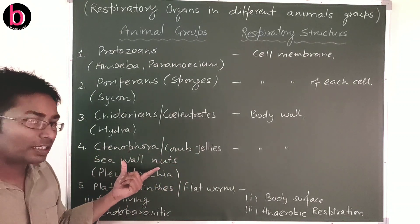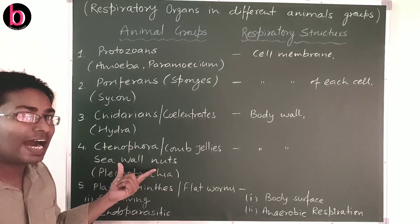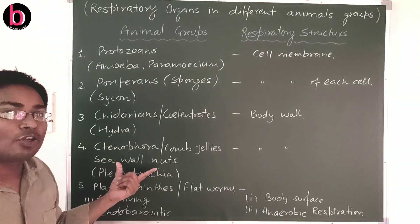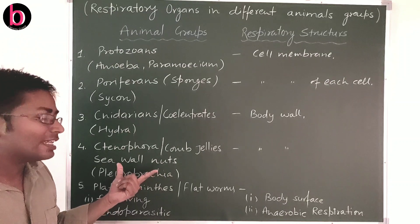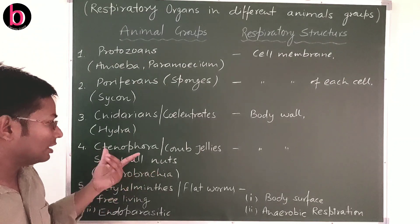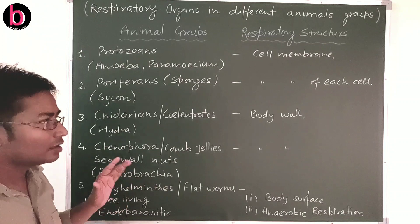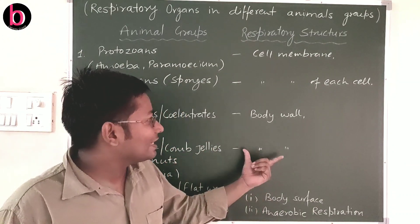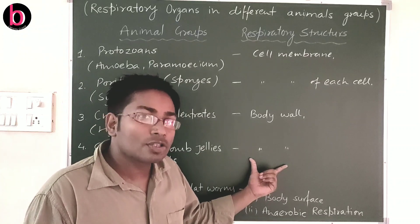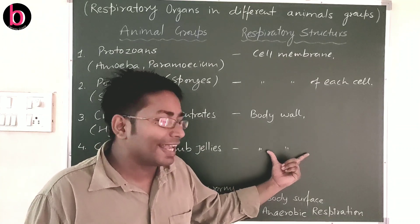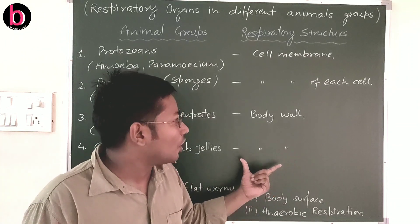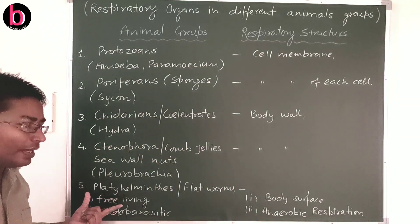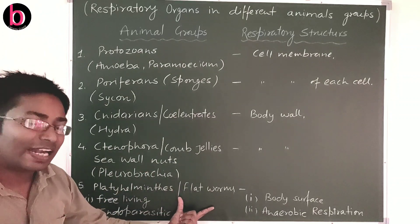The fourth phylum is Ctenophora, commonly known as comb jellies or sea walnuts. They are exclusively marine and have bioluminescent properties — that is, light emission. Example is Pleurobrachia. These organisms have organ-level body organization, and they also carry out gaseous exchange through their body wall.